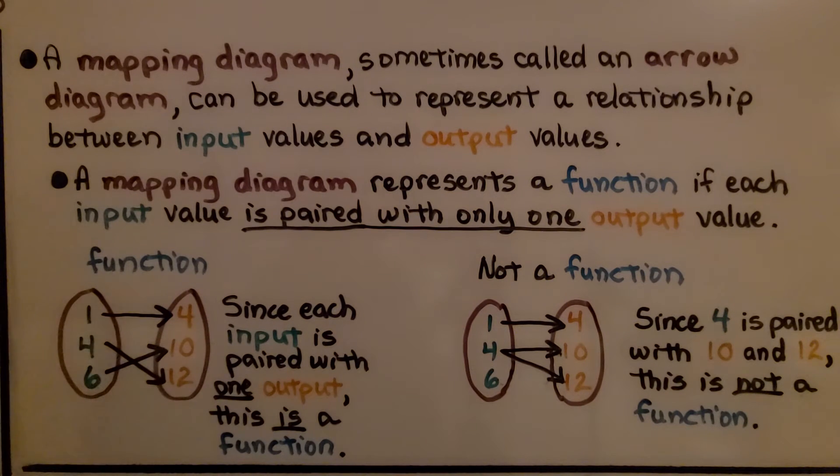Let's see why that's a function. We have one input, it's the number 1, and it's got an arrow going to the 4. Here we have an input 4 that's going to 12, and here we have a 6 that's going to 10. Since each input is paired with only one output, this is a function.